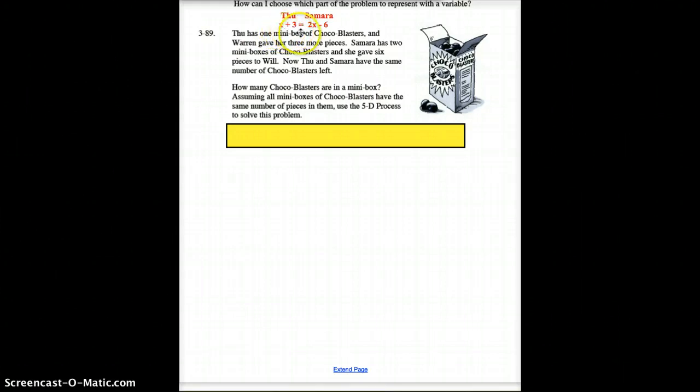If we're to take and put those into an equation, let's read the rest of this first. After she gave away six and after Thu got three more, Thu and Samara have the same number of Cocoa Blasters left. So let's think about that and put that into some kind of equation. Thu had a box - we don't know how many Cocoa Blasters are in the box, but he got three more. So he's got X plus three. Samara's got two boxes - we don't know how many are in a box, but she's got two boxes and she gave away six. So now what you're going to do is pause the video and plug in numbers for X until you get the two of those to be equal. Go ahead and do that. Pause the video at this moment.